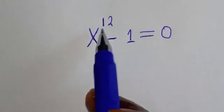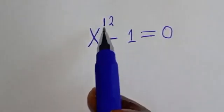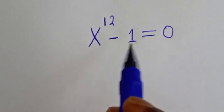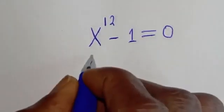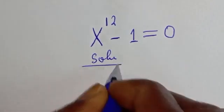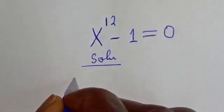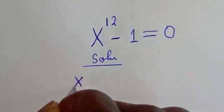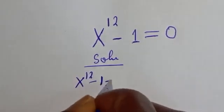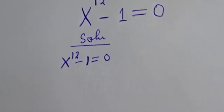Hello, how to solve for s from this given equation: s raised to power 12 minus 1 is equal to 0. We have the given equation s raised to power 12 minus 1 is equal to 0.